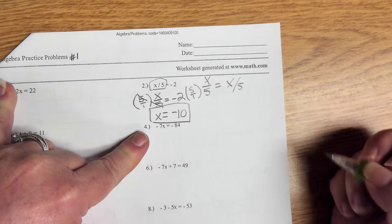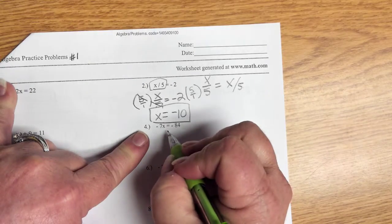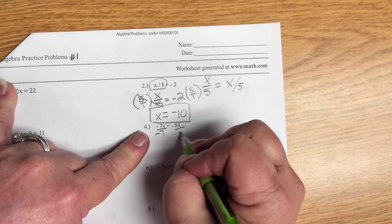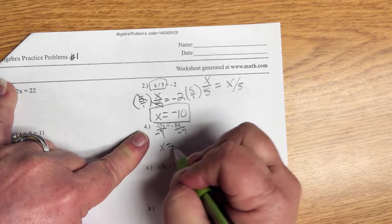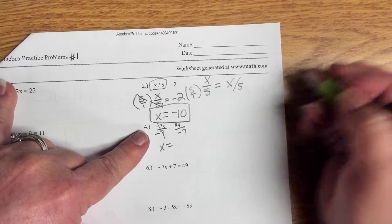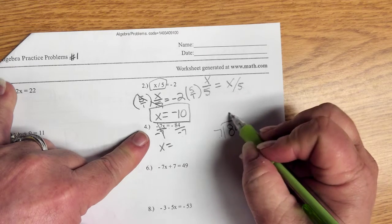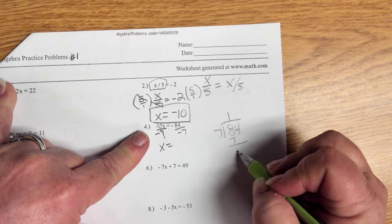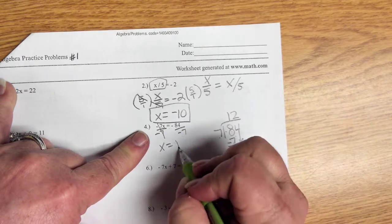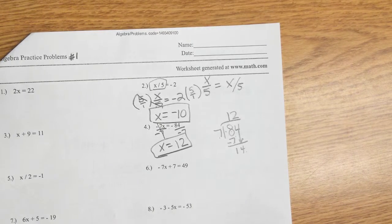I'm going to do number four for you. Let's look at number four. I got negative 7x equals negative 84. Divide this side by negative 7, divide this side by negative 7. That leaves you x equals—well, let's explore. A negative divided by a negative is going to give you a positive. I'm going to come over here and write 84 divided by 7. Well, 7 goes into 8 one time, bring down my 4, 7 goes into 14 two times. Looked scary, wasn't scary at all, was it?